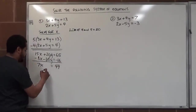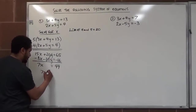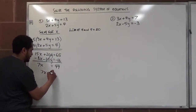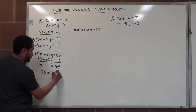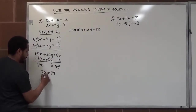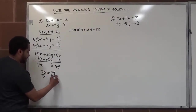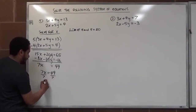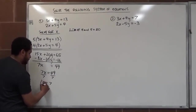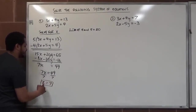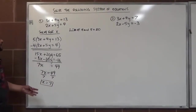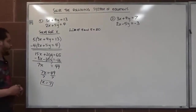We have 7x equals 49. Dividing both sides by 7, we get x equals 7. That's our first solution point for this problem.